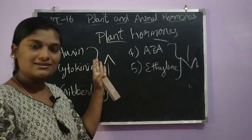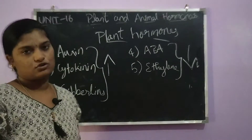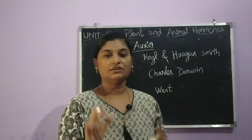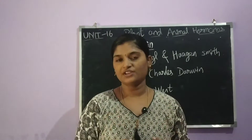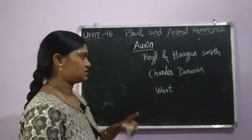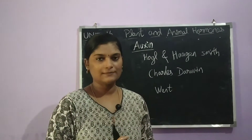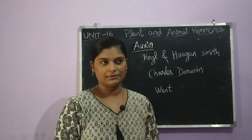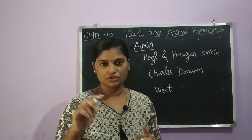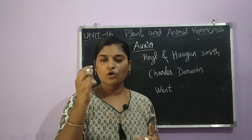First we will discuss about auxin. The hormone name comes from the Greek meaning 'to grow.' Auxin is the hormone that supports plant growth. In a plant, the coleoptile — the protective layer around the seedling when it germinates — is where auxin plays a role.